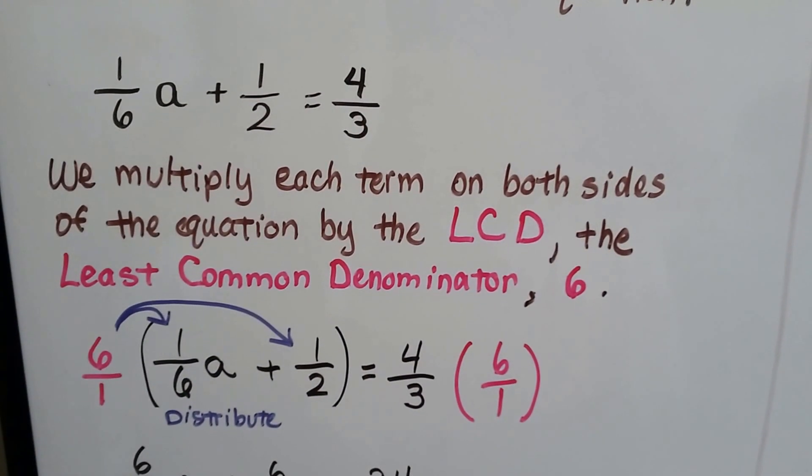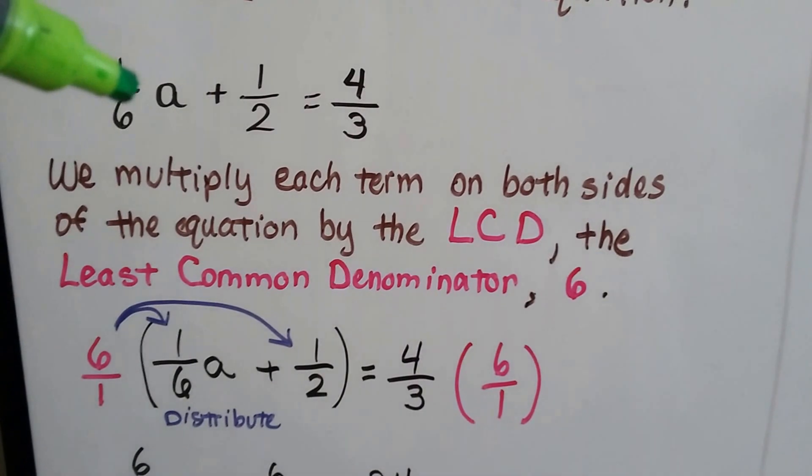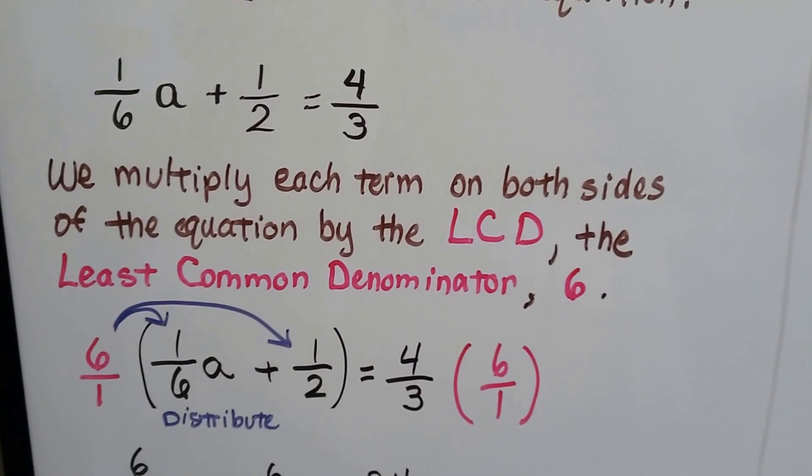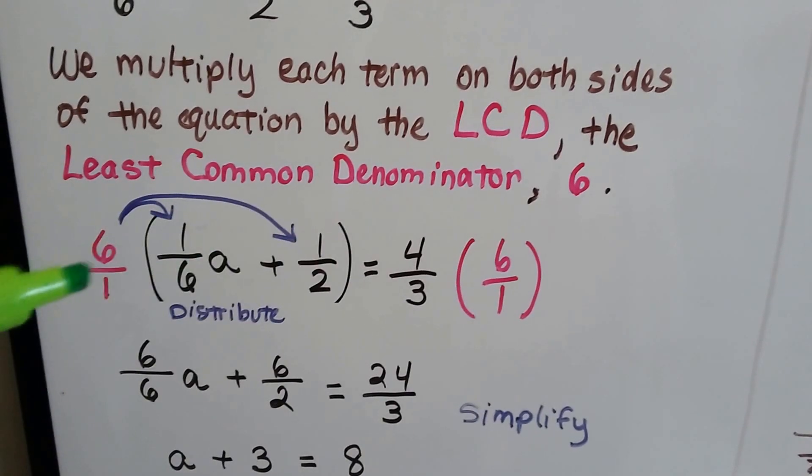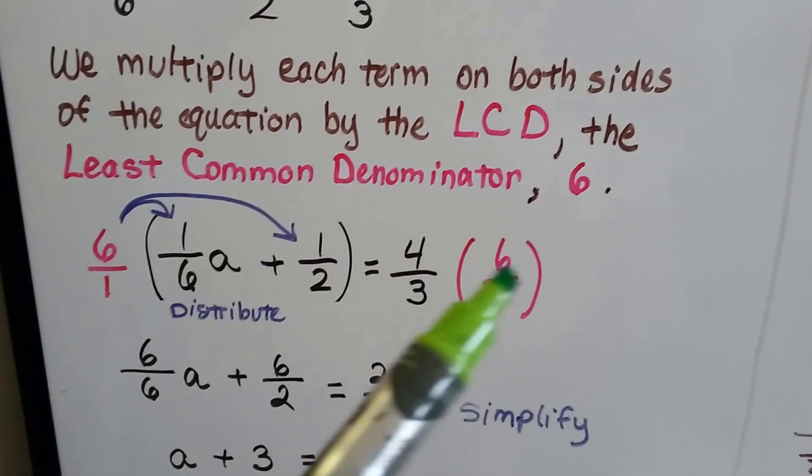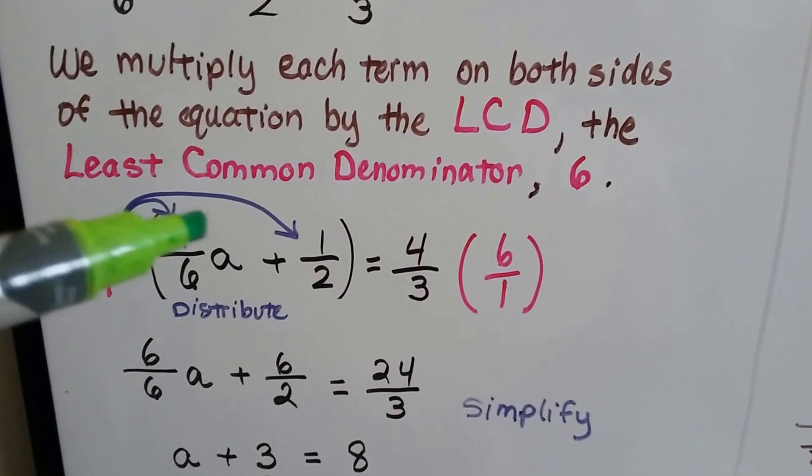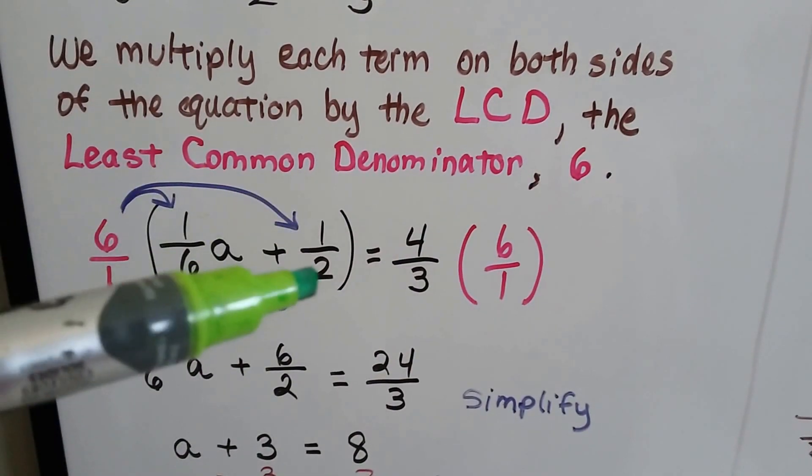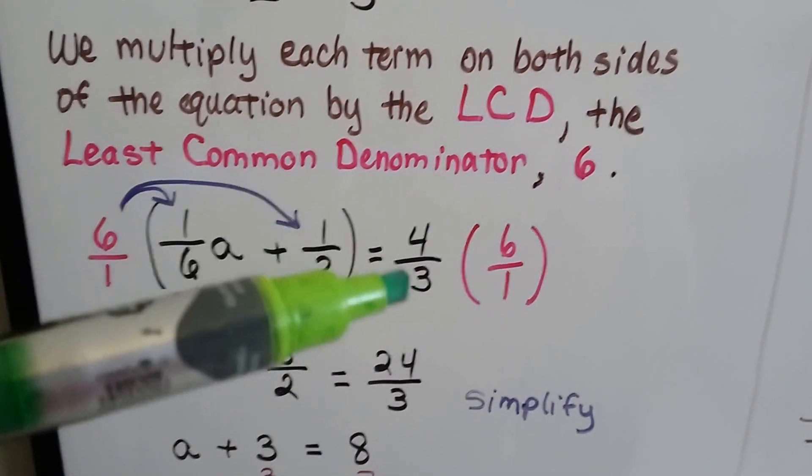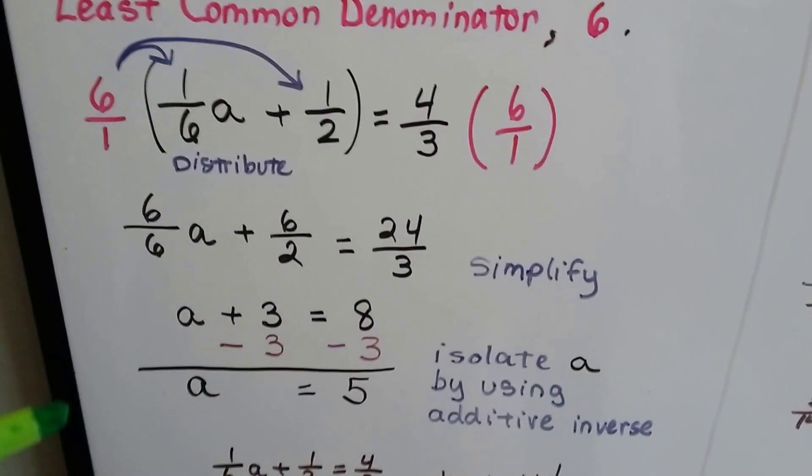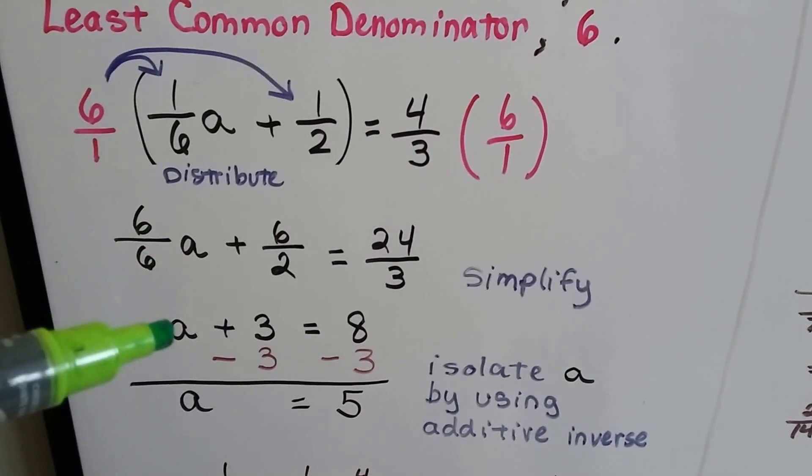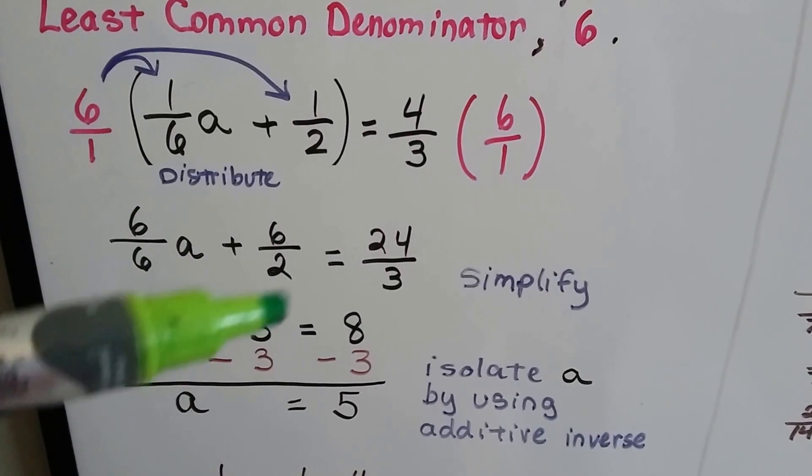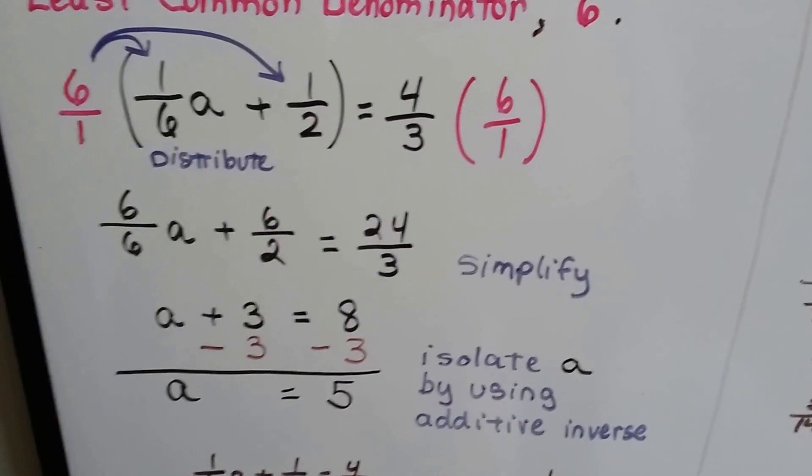We're going to multiply each term by 6 over 1. We can distribute it on this side and multiply it on this side. We're going to get 6/6a plus 6/2 and 24/3. When we simplify this, we get 1, same numerator and denominator, so we get 1a. We get a 3 here, and 24 divided by 3 is 8.